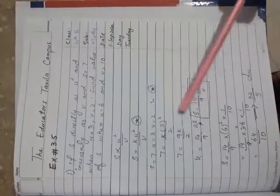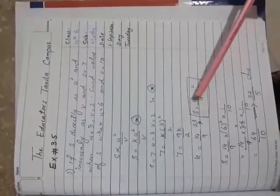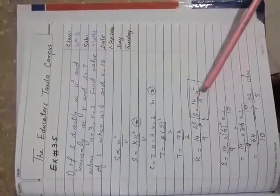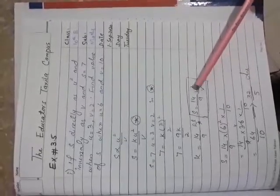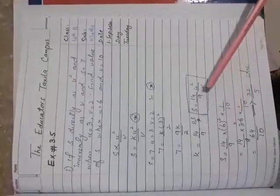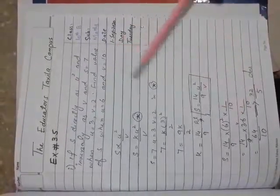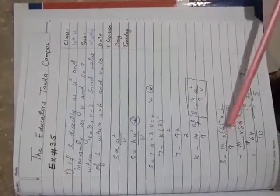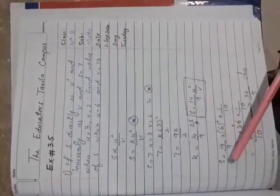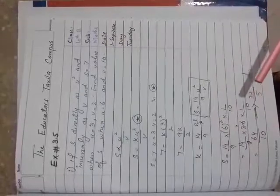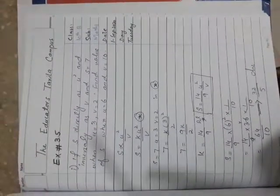Put these values in this equation. S is equivalent to 14 by 9 times u square over v. U is equivalent to 6 and v is equivalent to 10. Put the values, simplify them, and s is equivalent to 32 by 5. This is your answer. Thank you.